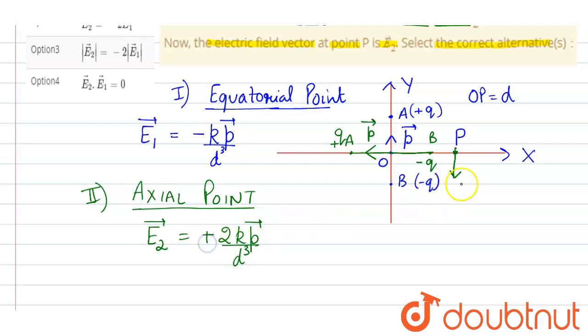Here it is positive that means the direction of E2 will be along p, that means this side. This is E2.